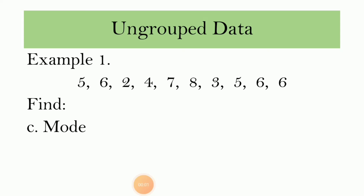And last is to find the mode. The mode is the data with the greatest frequency. As we can see from our data, 6 appears with the greatest frequency among the other data. Therefore, our mode is 6.